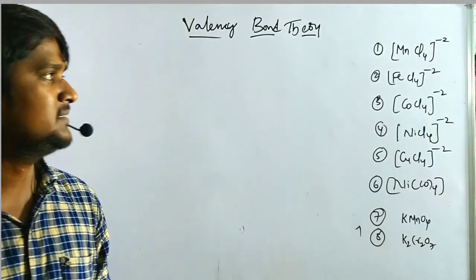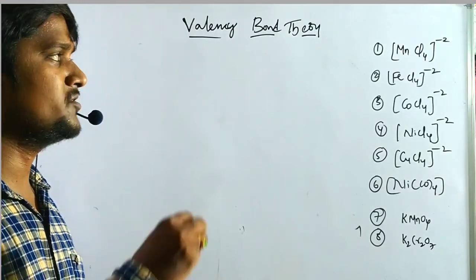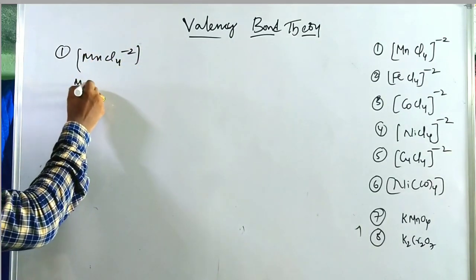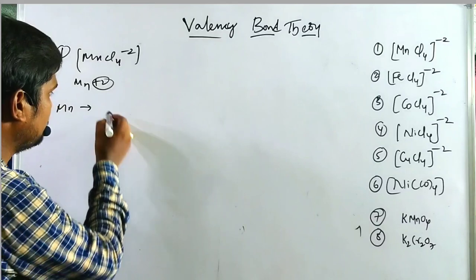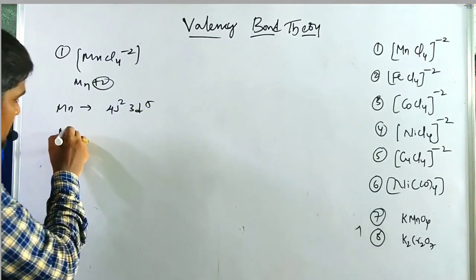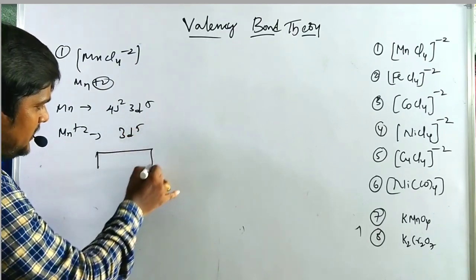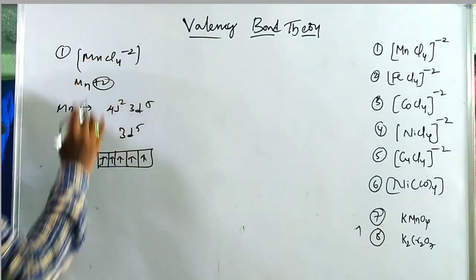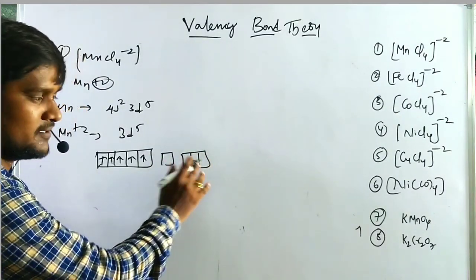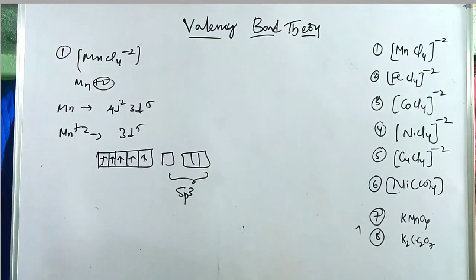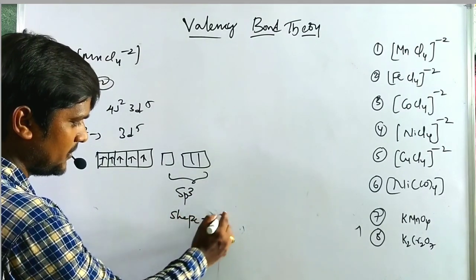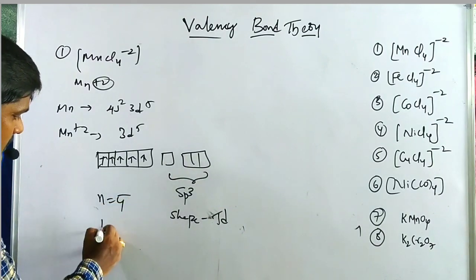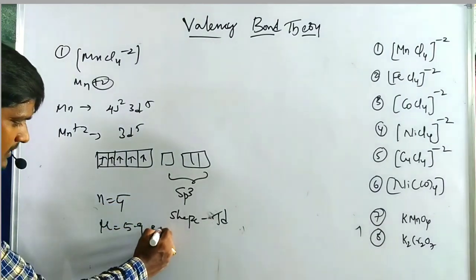Now let us apply valence bond theory to tetrahedral complexes. First example: [MnCl₄]²⁻. Mn is in +2 oxidation state; manganese configuration is 4s² 3d⁵. Mn²⁺ gives 3d⁵. With 5 electrons each singly filled (weak field ligand follows Hund's rule), we use 1 s orbital and 3 p orbitals — sp³ hybridization. Shape is tetrahedral. Number of unpaired electrons is 5, μ = 5.9 Bohr magnetons — paramagnetic.